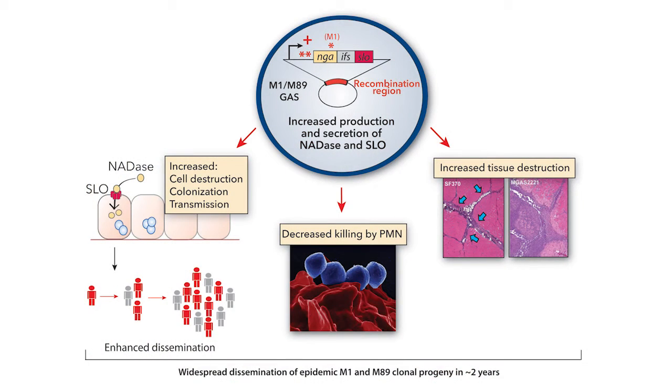There are changes in the germ — the pathogen — that contribute to the epidemics. The surprise was that the changes involved changes in the genes encoding two very potent toxins: streptolysin O and SPN, which is an NADase toxin. The crucial thing is that those two toxins work hand-in-hand to cause disease in humans.